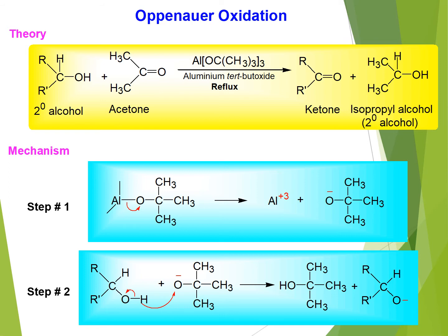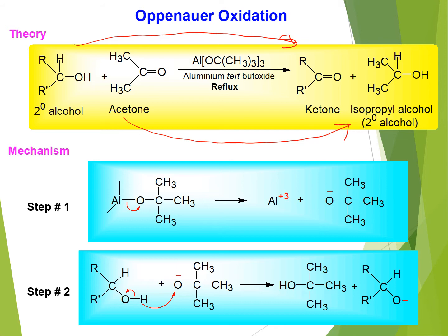After completion of the reaction, the secondary alcohol will be converted to its corresponding ketone, and the acetone will be converted to the corresponding secondary alcohol — isopropyl alcohol. In this reaction, secondary alcohol is oxidized to ketone, which is why this reaction is known as an oxidation reaction. Aluminum tertiary butoxide is used as a catalyst, and after completion of the reaction, the catalyst remains the same as before.